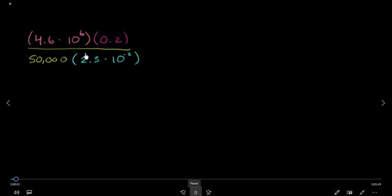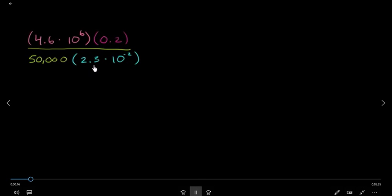We have two points: 4.6 points, which is 0.10. And point 2, which is 0.10. We have to change the positive and negative side. We have to change the positive side, which is 0.5 points. This is 0.20 points, which is 0.10.